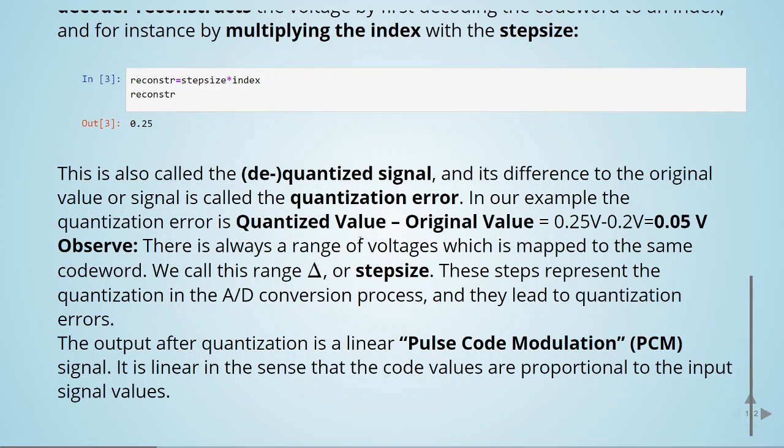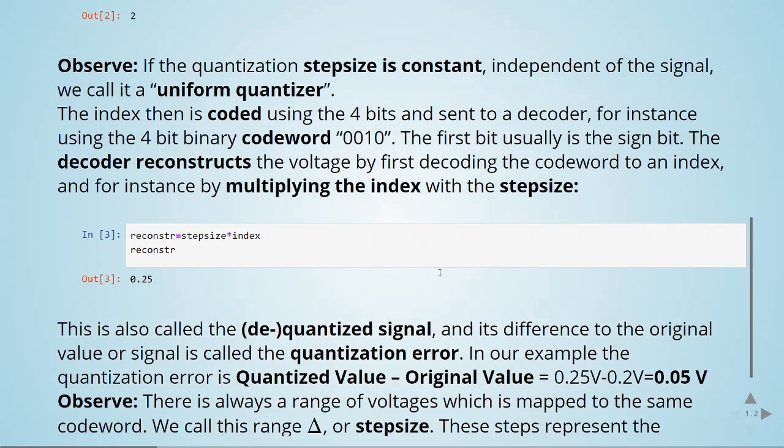The output after the quantization is a linear pulse code modulation. It's linear in the sense that the code values are proportional to the input signal values.